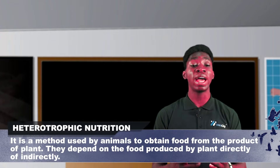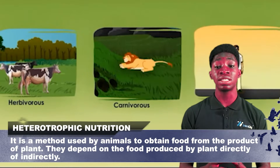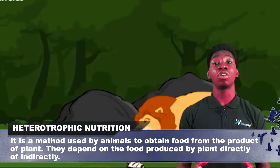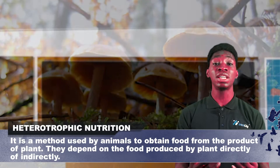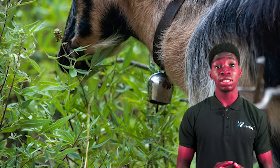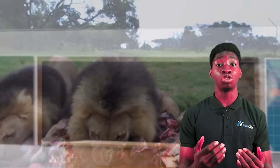The second type of nutrition is heterotrophic nutrition — a method used by animals to obtain food from the products of plants. Heterotrophic nutrition is feeding directly or indirectly on organisms that have synthesized their own food. For example, a guinea grass synthesizes its own food, then a goat feeds on it, and if a lion feeds on that goat, both the goat and lion are exhibiting heterotrophic nutrition, because they cannot manufacture their own food.